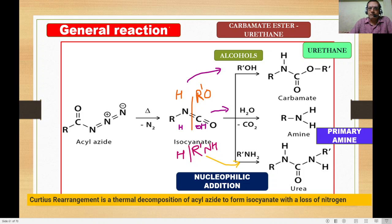For the nucleophilic addition: with R-OH (alcohol), we separate it as R′O and H. The H adds to nitrogen and OR adds to carbon, giving R-NH-CO-OR, which is a carbamate (urethane). With water (H and OH), the product R-NH-CO-OH is carbamic acid, which loses CO2 to give the primary amine.